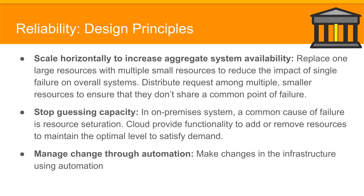Distribute requests among multiple smaller resources to ensure they do not share a common point of failure. Do not guess capacity — in on-premise systems, resource saturation is a common cause of failure. Cloud provides functionality to add or remove resources to maintain the optimal level to satisfy demand. Finally, manage change through automation by making changes to your infrastructure using automation.